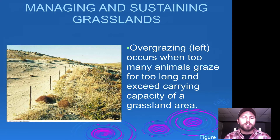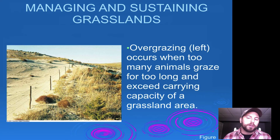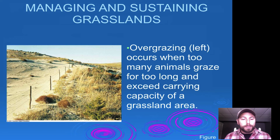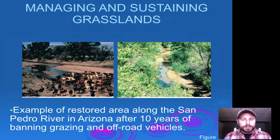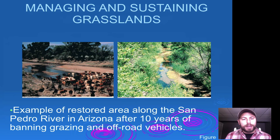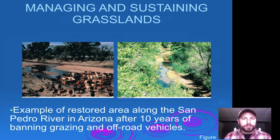Overgrazing occurs when too many animals graze on an area for too long, exceeding the carrying capacity of that grassland — removing all vegetation and leaving bare spots that open up for erosion. As an example, a restored area along the San Pedro River shows how, when you manage the area and reduce overgrazing, it can come back eventually through succession.